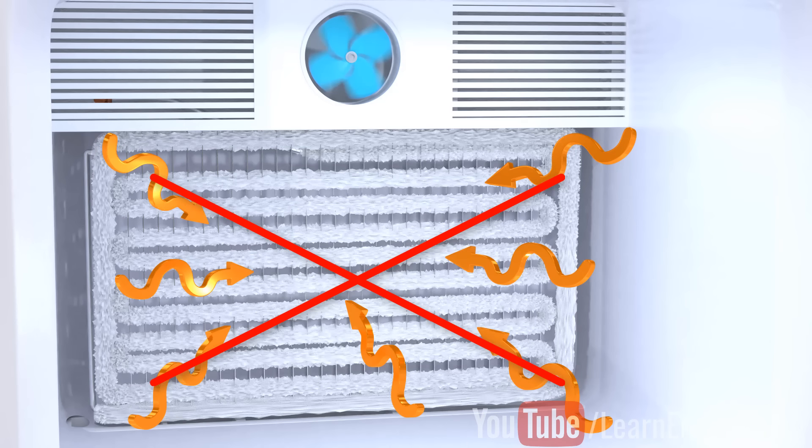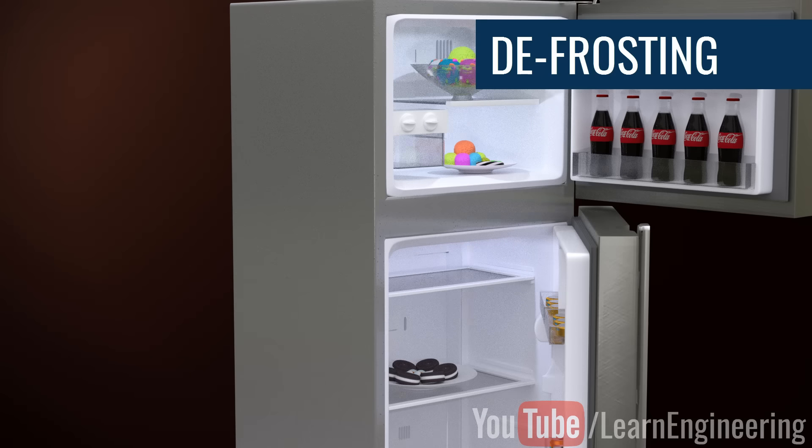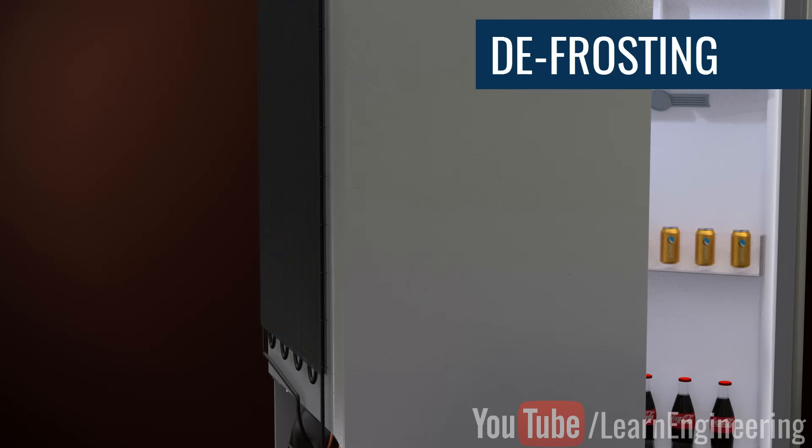One great way to solve this issue is to remove frost occasionally with the help of a heating rod. This is why you can see a pan and water condensate at the bottom of your refrigerator.